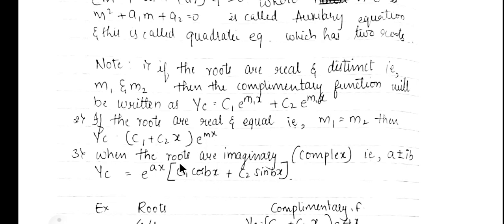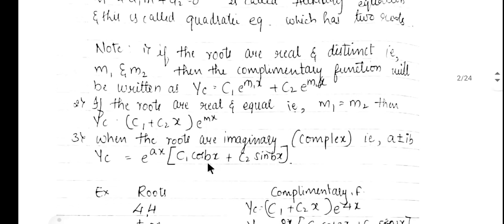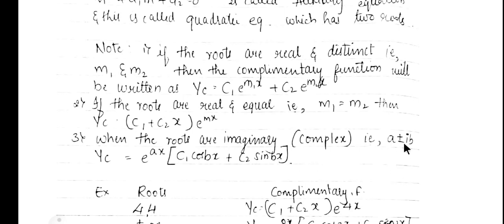When the roots are imaginary in the form a ± ib, the complementary function is written as yc = e^(ax)·(c1·cos(bx) + c2·sin(bx)), where a appears in the exponential and b appears inside the trigonometric terms.